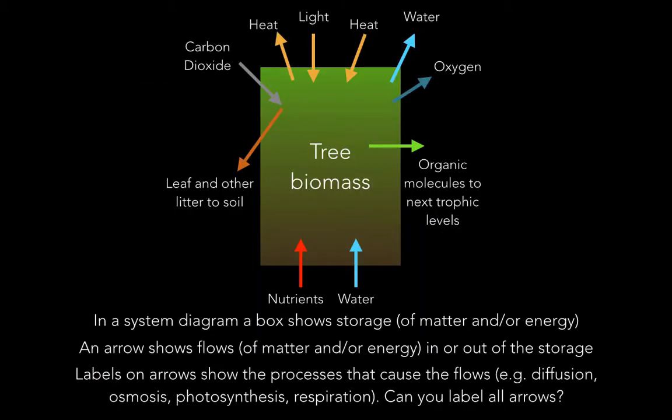A system can be represented by a box diagram. The box represents the storage of matter or energy — the biomass as well as the bond energy contained within the biomass in the case of the tree. The arrows show the flows of inputs and outputs, and any labels on the arrows show the processes that caused these flows, such as photosynthesis, respiration, diffusion, etc.